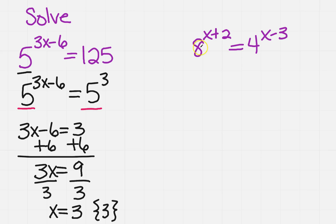So 8 is 2 to what power? Well, it is 2 to the third, but that's just for 8, so I still need to have that x plus 2 hanging out. Then 4 is 2 to what power? It's 2 squared. Again, that's just for the 4, so now I have x minus 3.